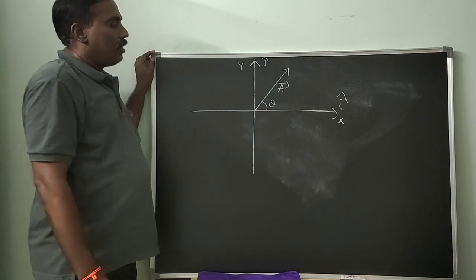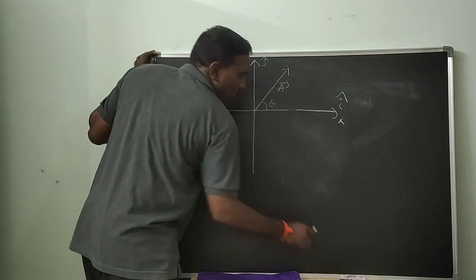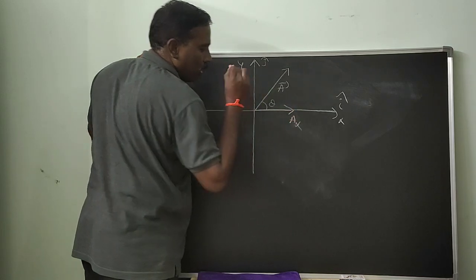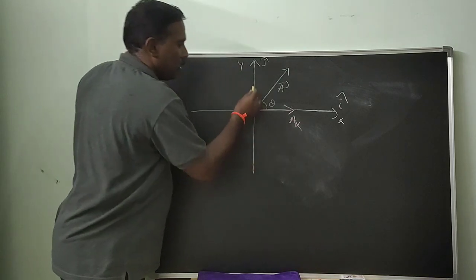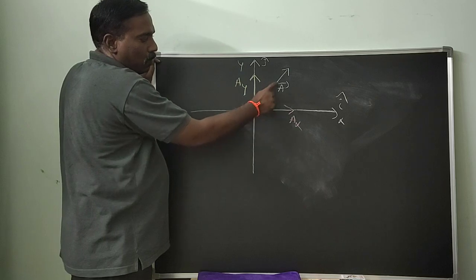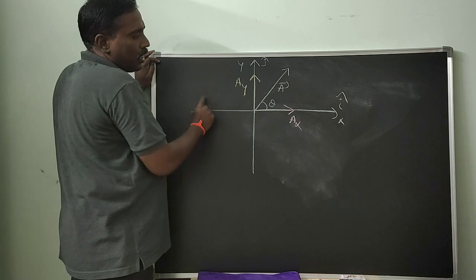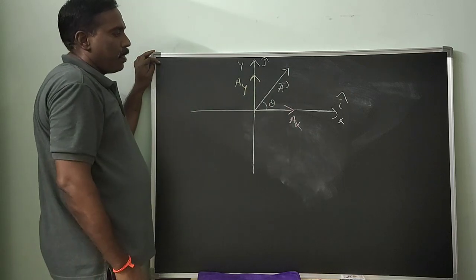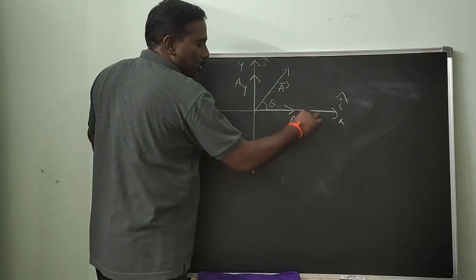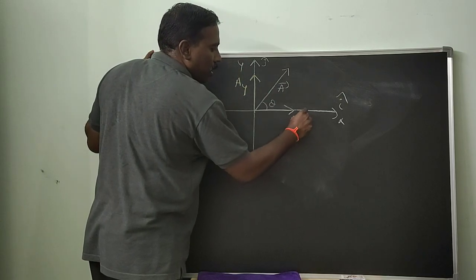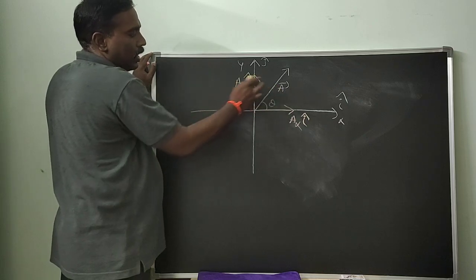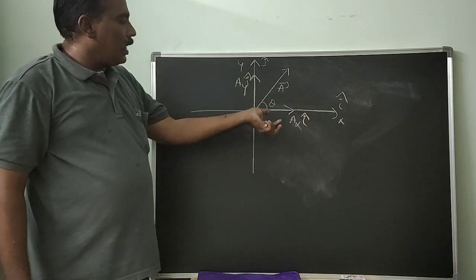Vector A-bar makes an angle theta with the x-axis. Draw two components: first, Ax — one line along the x-axis; second, Ay — one line along the y-axis. Ax is known as the component of the vector along the x-axis, and Ay is known as the component of the vector along the y-axis. Ax·i-cap is the vector component along the x-axis, and Ay·j-cap is the vector component of A-bar along the y-axis.